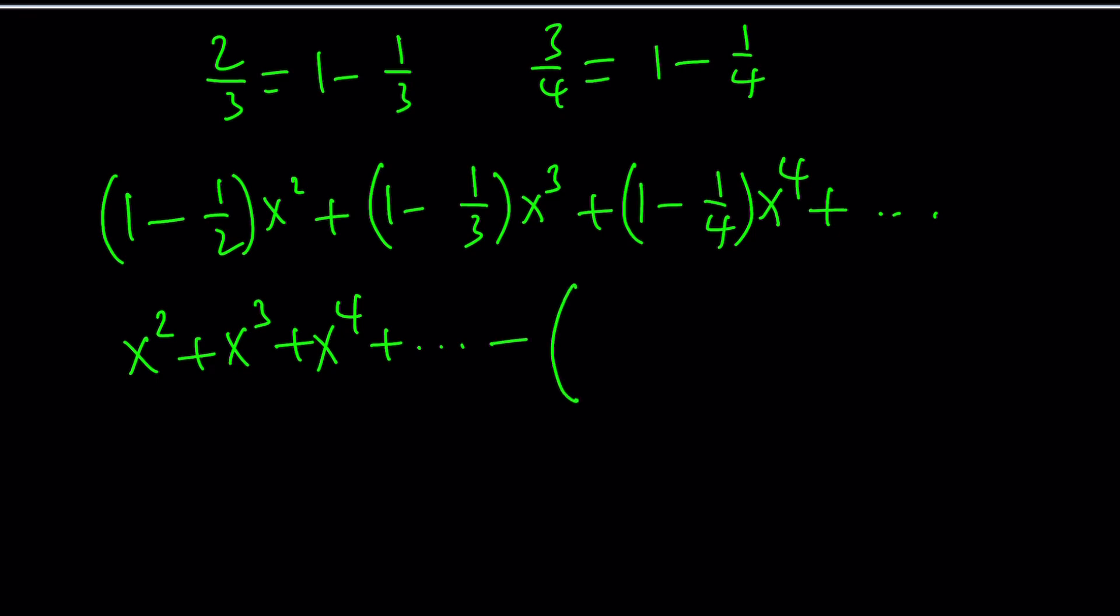Let's go ahead and put all of them in parentheses so we don't have to write the minus sign because we're lazy. 1 half x squared, 1 third, x to the third, 1 fourth, x to the fourth, so on and so forth.